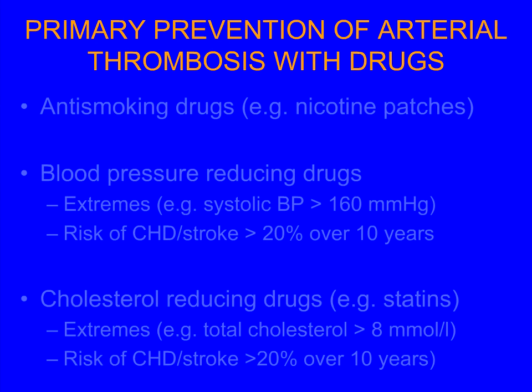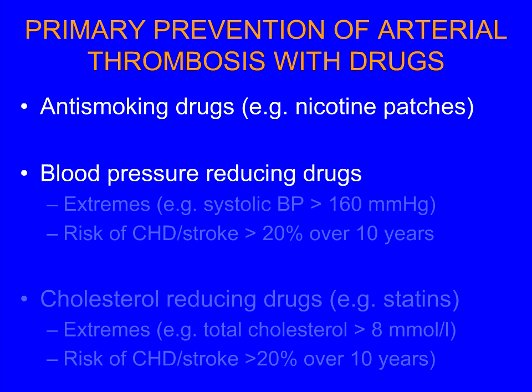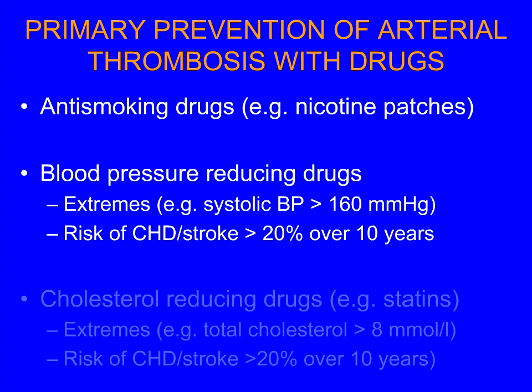So finally, what can we do in terms of primary prevention? In high-risk individuals, there's a good case — if a person cannot stop smoking — for considering short-term anti-smoking drugs such as nicotine substitution with patches or chewing gum. For blood pressure-reducing drugs, most clinical guidelines advocate drug treatment for blood pressure at an extreme — for example, even a young person with a systolic blood pressure of 160 in the absence of other risk factors should be treated because it's going to have adverse effects throughout their life.